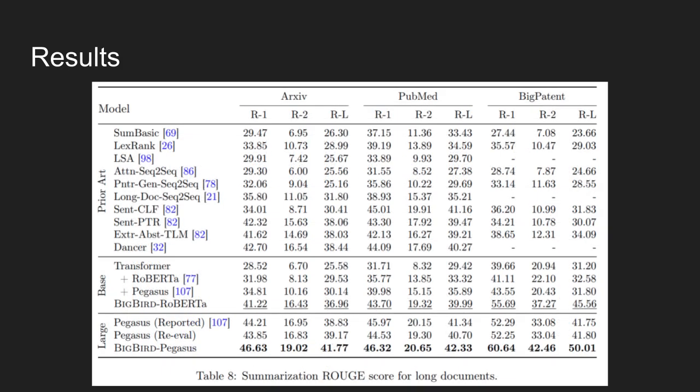Lastly, this table shows summarization of F1 scores on long documents. The large model, called Big Bird Pegasus, achieves top performance on all long document datasets.